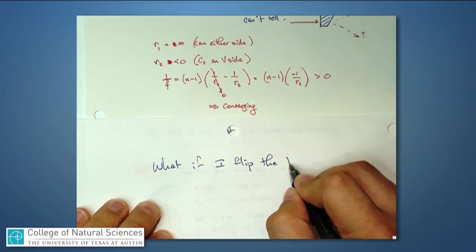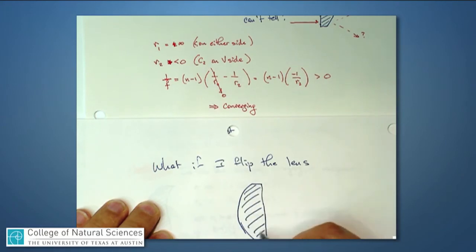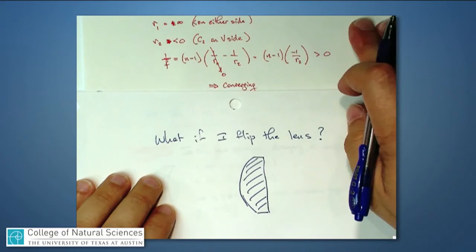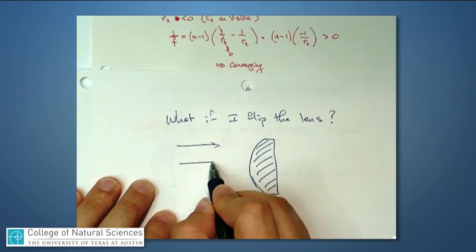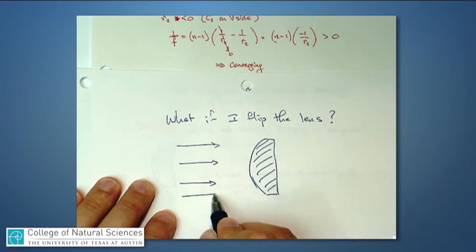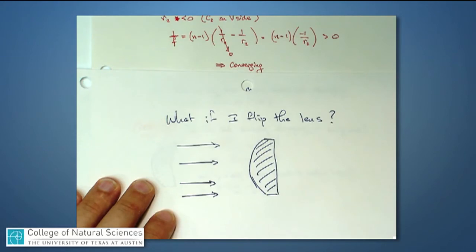I want to consider the opposite case. Let's take the same lens and flip it around and ask, is this a converging lens? So I'm doing nothing different other than just having the light come into a lens that I flipped around 180 degrees.